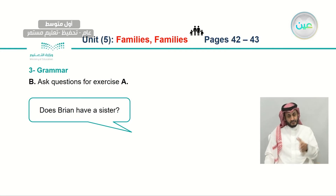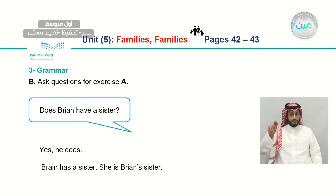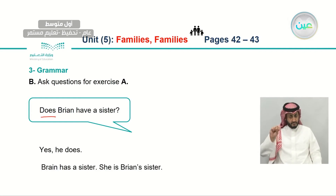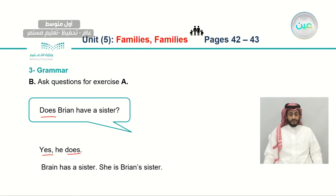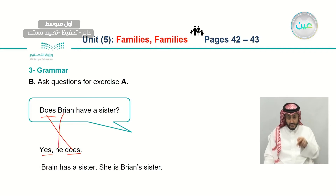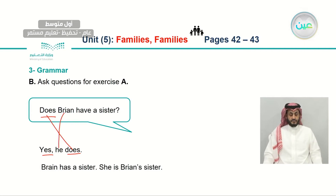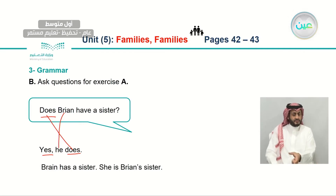Let's go to letter B: ask questions for exercise A. Does Brian have a sister? Yes, he does. The question starts with 'does,' and the answer is yes or no — yes, he does. Notice: 'he' stands for Brian, followed by 'does.' Brian has a sister — how to say that in another way? She is Brian's sister — I use the possessive S.